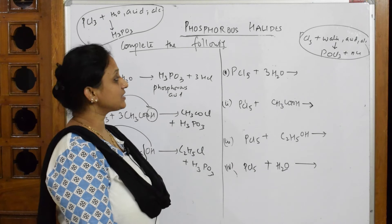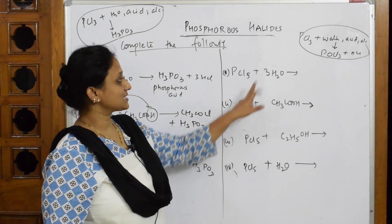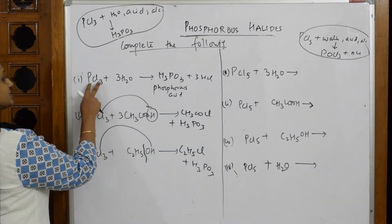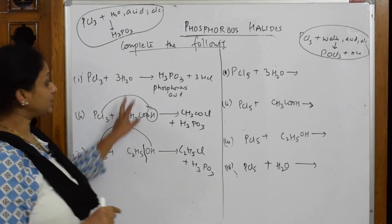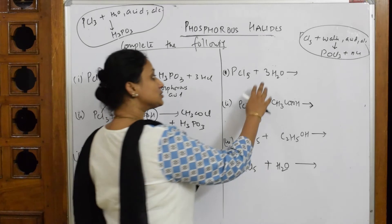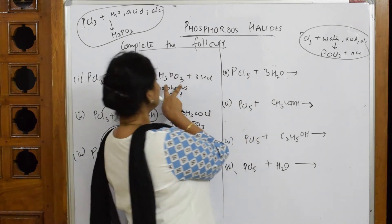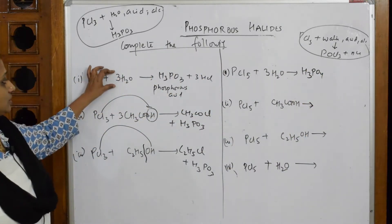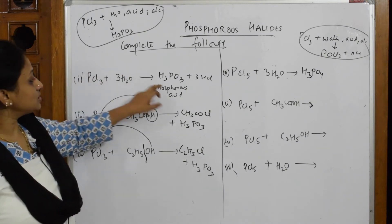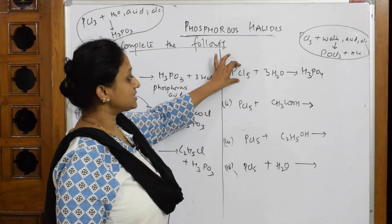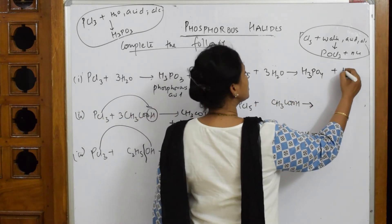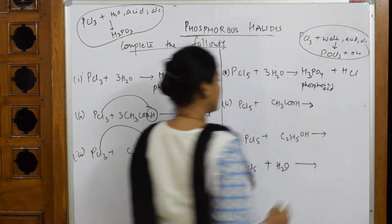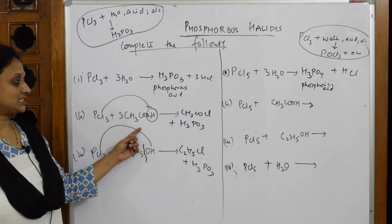Now let's start with PCl₅. Whenever PCl₅ is treated with acid, alcohol, or water, you get phosphoryl chloride. For PCl₃ plus three moles of water, you got phosphorous acid (H₃PO₃). For PCl₅ plus water, you get phosphoric acid (H₃PO₄) — a higher oxidation state. PCl₃ gives H₃PO₃; PCl₅ gives H₃PO₄, along with HCl.